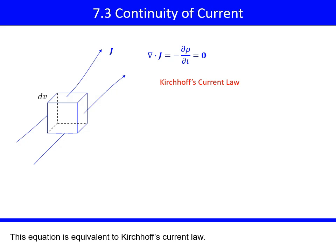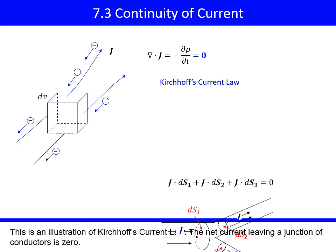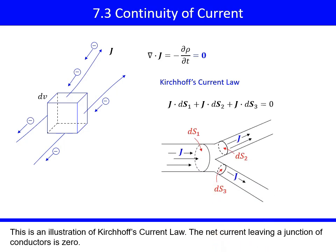This equation is equivalent to Kirchhoff's current law. The amount of current flowing into the volume is the same as the amount flowing out of the volume. This is an illustration of Kirchhoff's current law. The net current leaving a junction of conductors is 0.